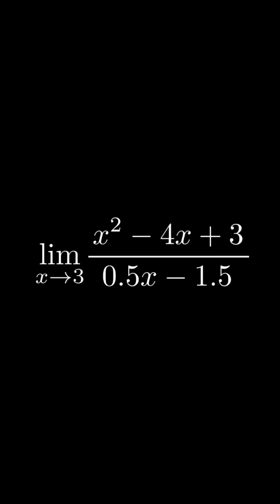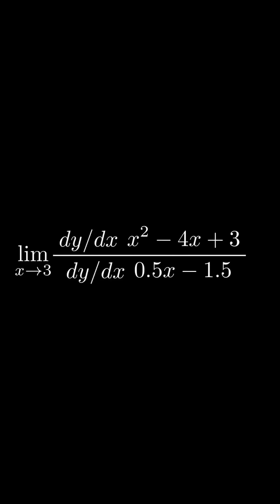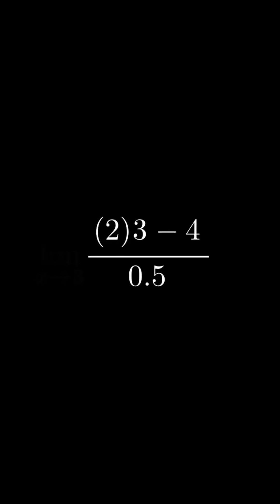So to solve our slope ratio problem, all we have to do is find both of the derivatives, substitute 3 for x, and then divide to get the final answer.